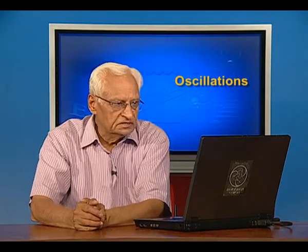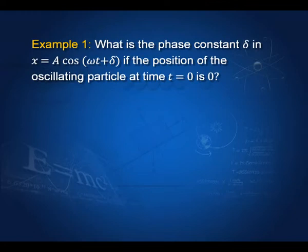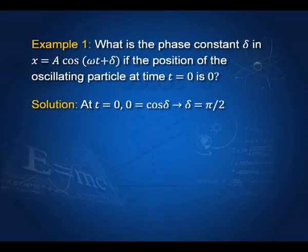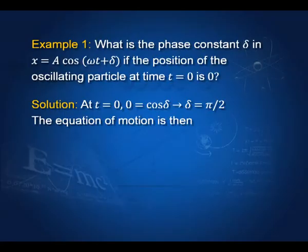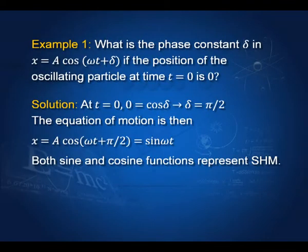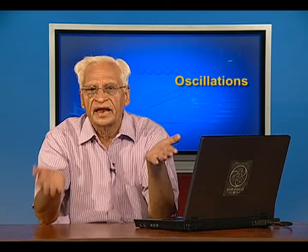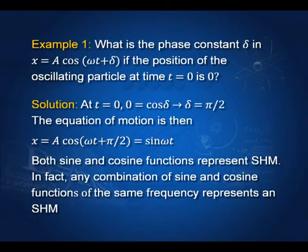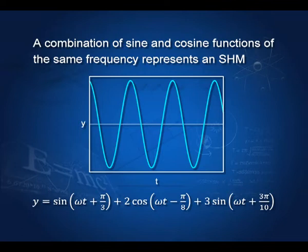Example 1: What is the phase constant δ in x = a cos(ωt + δ) if the position of the oscillating particle at t = 0 is zero? At t = 0, we have 0 = a cos(δ), so δ = π/2. The equation of motion is then x = a cos(ωt + π/2) = −a sin(ωt). Both sine and cosine functions — and indeed any combination of them — can represent simple harmonic motion.